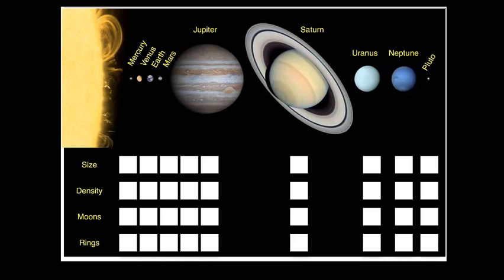When we look at the solar system, we see a number of different objects, and here we have 10 objects, including the Sun, and we have Mercury, Venus, Earth, Mars, Jupiter, Saturn, Uranus, Neptune, and Pluto.